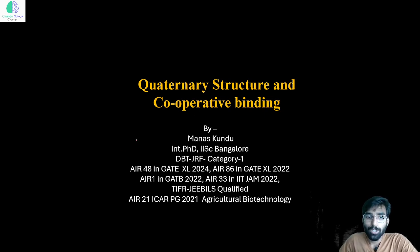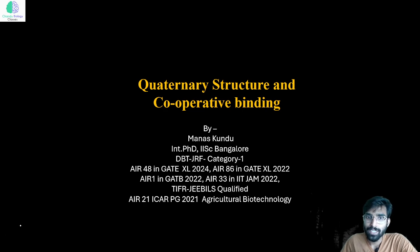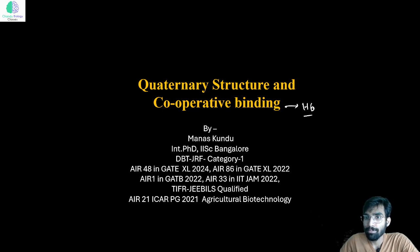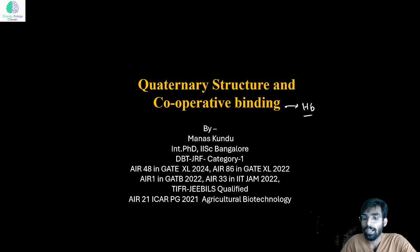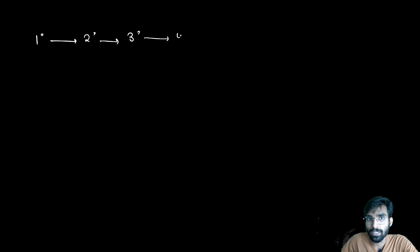Today we'll talk about the quaternary structure of protein and the cooperative binding of hemoglobin. It's quite important to understand the Hill equation, Hill coefficient, and the oxygen dissociation curve, and what the responsible factors are for the two different models. In protein structure, there are four levels: primary, secondary, tertiary, and quaternary.